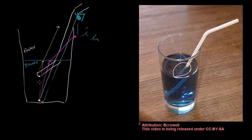So to this observer, this point on the straw will look to be right over here, even though the light was emitted down here. And that's why the straw actually looks bent.